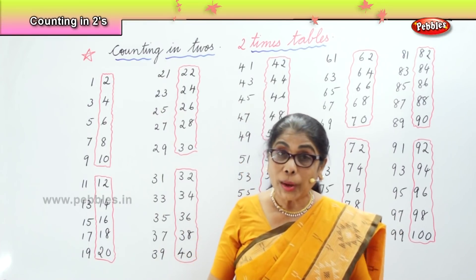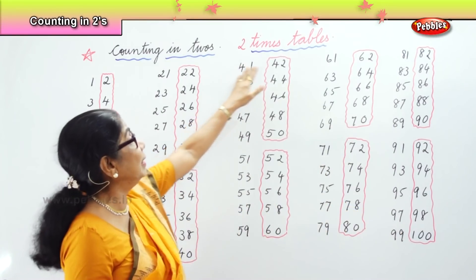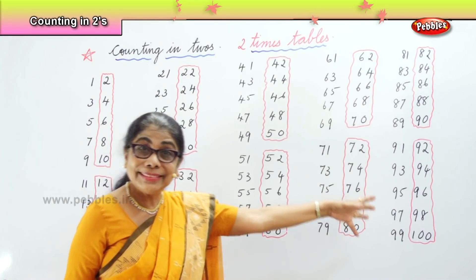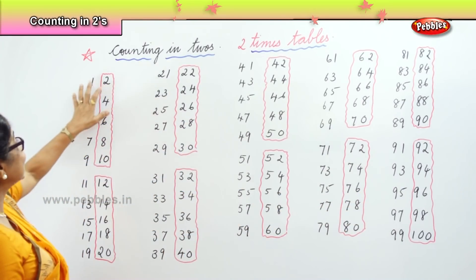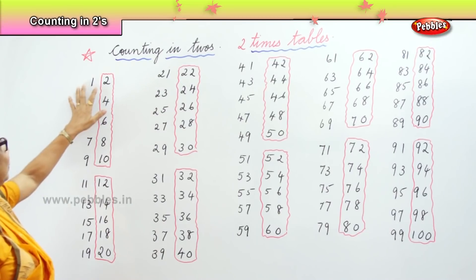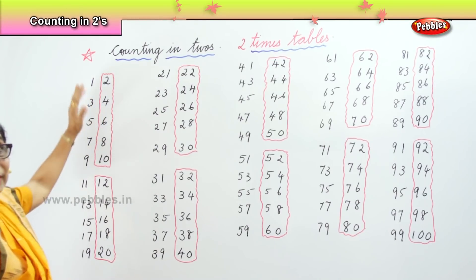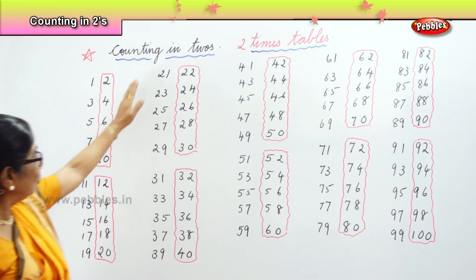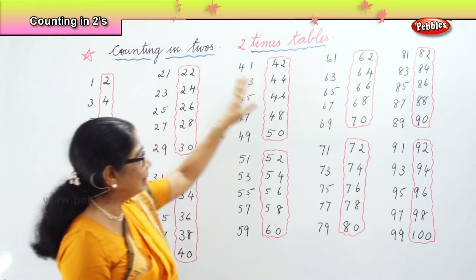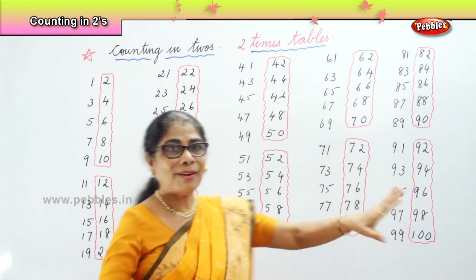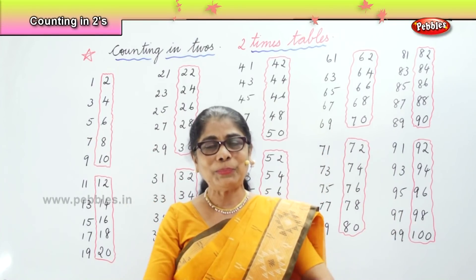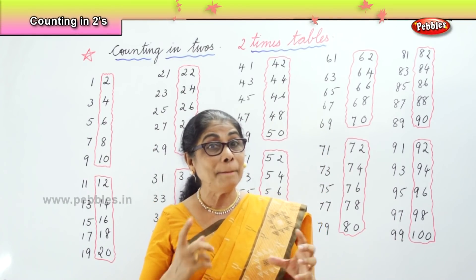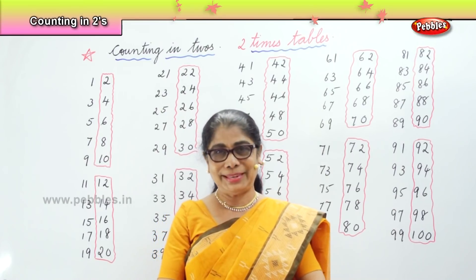Easy way to build our two times table. It's called skip counting: 1, 2, 3, 4, 5, 6 — forget about the ones. You see all the ones are on one side, and all what is boxed are twos. So we learn to do the magic way of building the two times table.